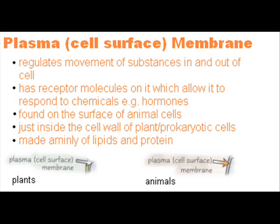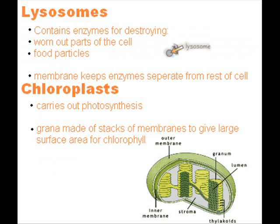The plasma cell surface membrane is found on the surface of animal cells and just inside the cell wall of plant cells and prokaryotic cells. It's made mainly of lipids and protein. It regulates the movement of substances into and out of the cell. It also has receptor molecules on it, which allow it to respond to chemicals like hormones.